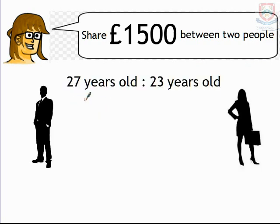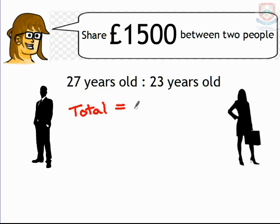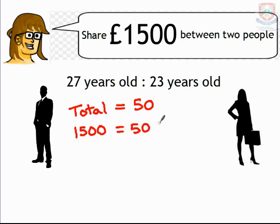Another typical problem is based on age. This follows exactly the same idea — we try and work out how many years there are altogether. So the total number of years of these two people added together would be 27 and 23, which is 50. So there are 50 years between them. So for every year that one of them has been alive, we can work out how much they should get. So £1,500 divided by 50 equals £30.